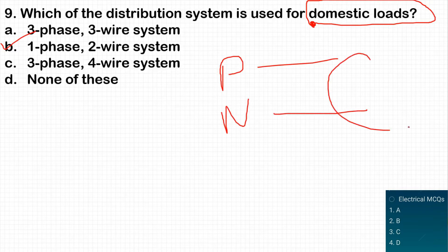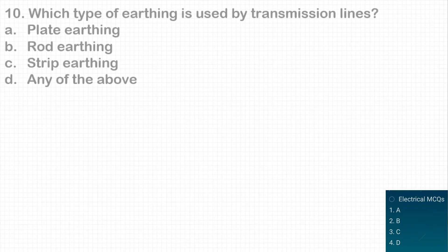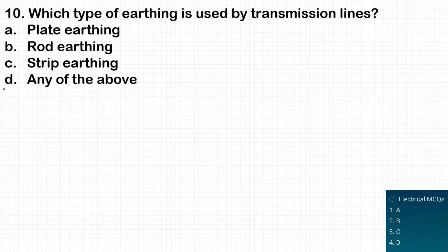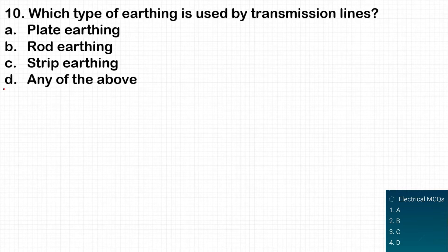The next question: which type of earthing is used by transmission lines? For transmission lines, the type of earthing used is strip earthing. So option C is the correct answer.